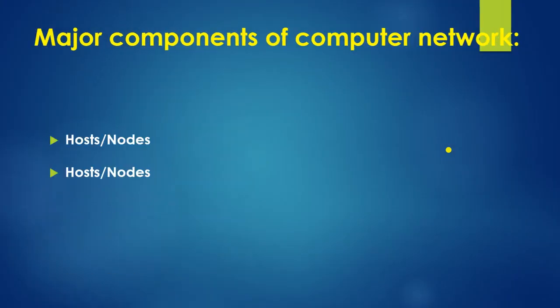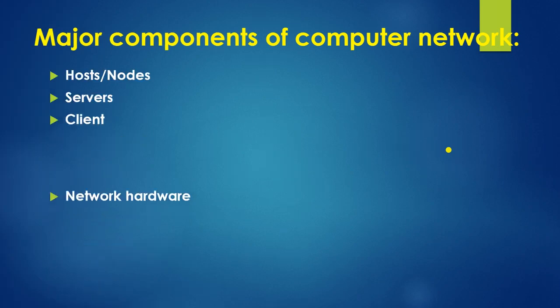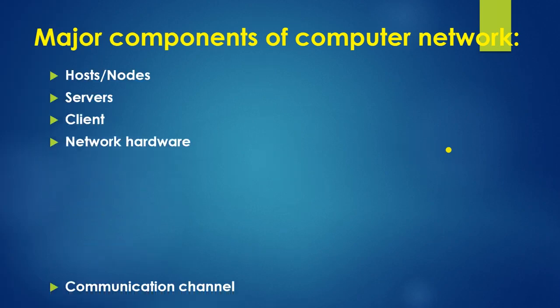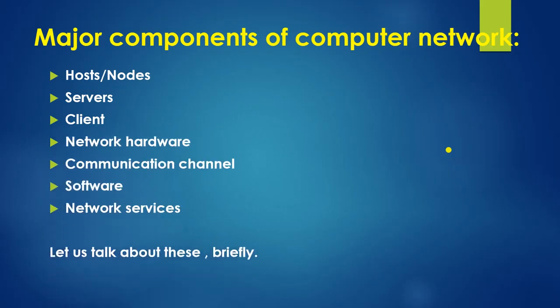Major components of a computer network are: host or nodes, server, client, network hardware, communication channel, software and network devices, and network services. We will talk about each of these in brief.